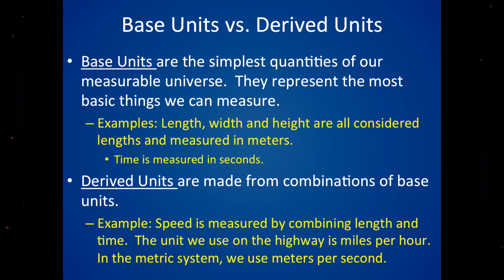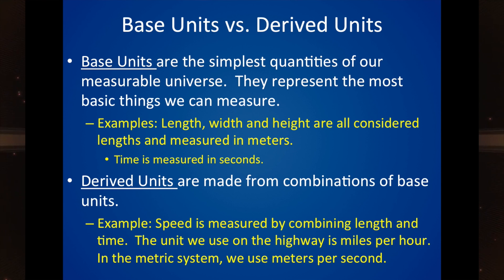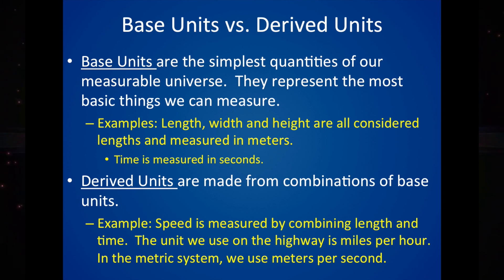This system is cut up into your most basic units and then derived units. The basic units are the simplest quantities of our universe. They are things like length, width, and height. These are three dimensions, but they're all measured in meters because they're all considered lengths on different axes like X, Y, and Z axes. Time is another base unit. It's measured in seconds.